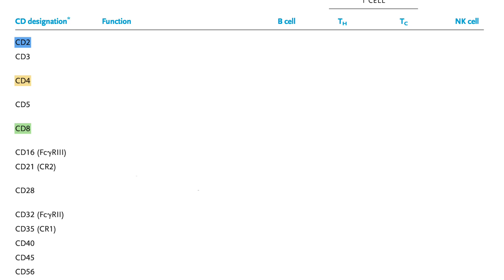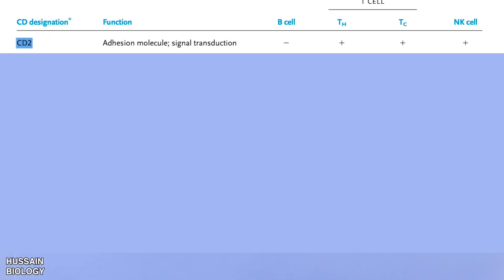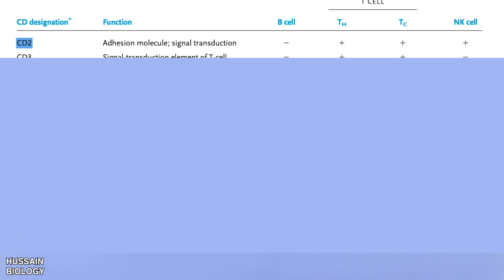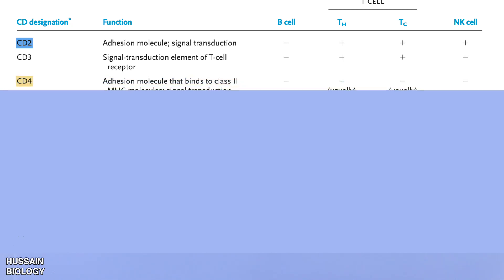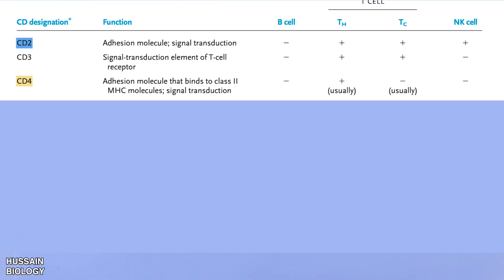The first CD marker is CD2, an adhesion molecule used in signal transduction; it is absent in B cells but present in Th cells, Tc cells, and NK cells. CD3 is also a signal transduction molecule; it is absent in B cells, present in Th and Tc cells, and absent in NK cells. CD4 is an adhesion molecule that binds to MHC class II molecules and aids in signal transduction; it is only present in T helper cells and absent in all other cells.